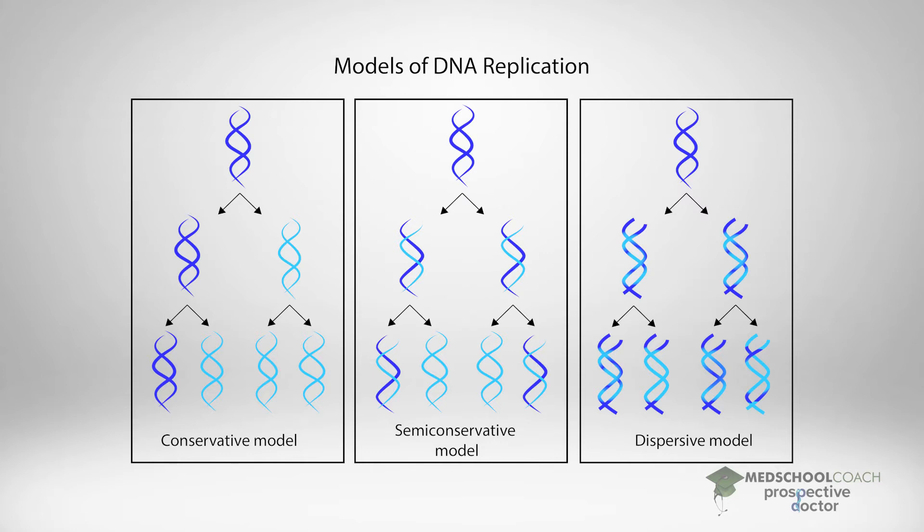In the semi-conservative model, you can see that the original DNA molecule, the old one, was separated into two single strands, and then complementary strands were synthesized from each. So the newly produced strands are half-old, half-new.